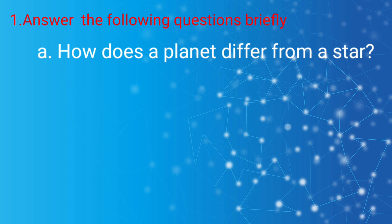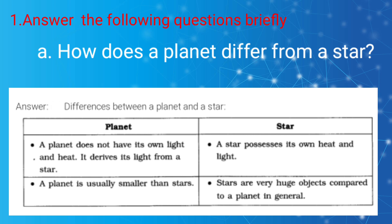First, answer the following questions briefly. A: How does a planet differ from a star? Answer: A planet does not have its own light or heat. It derives its light from the star. A planet is usually smaller than a star. A star produces its own light and heat.